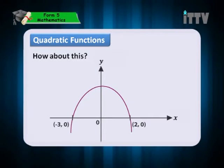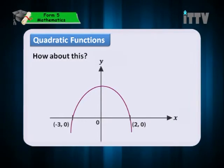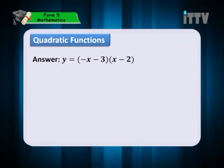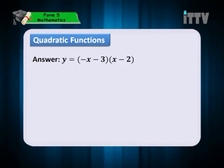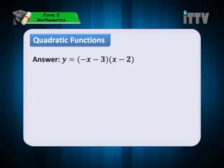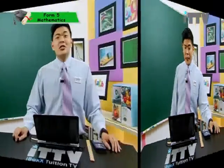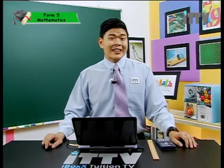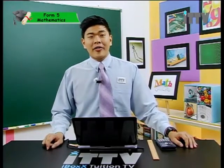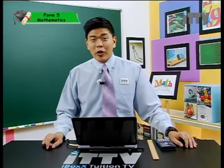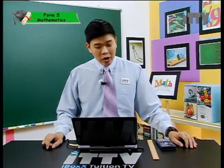What about this next graph? The answer is y equals to negative x minus 3, x minus 2. Remember, it is the parabola which is in the shape of an n, so the coefficient of x-square is negative. The most important characteristic of a quadratic function is you have an x-square — the highest power of x is 2. But remember, a, the coefficient for x-square, cannot be 0.